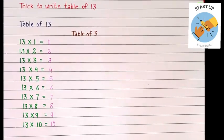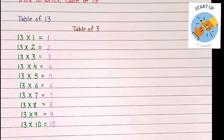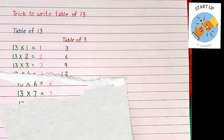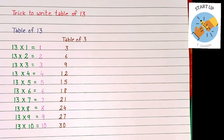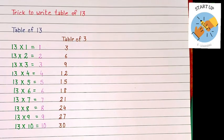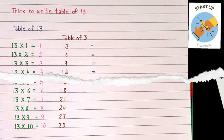Next step is to write table of 3 on the right side of it. Let's start by writing 3 ones are 3, 3 twos are 6, 3 threes are 9 like that. It will end by 3 tens of 30.